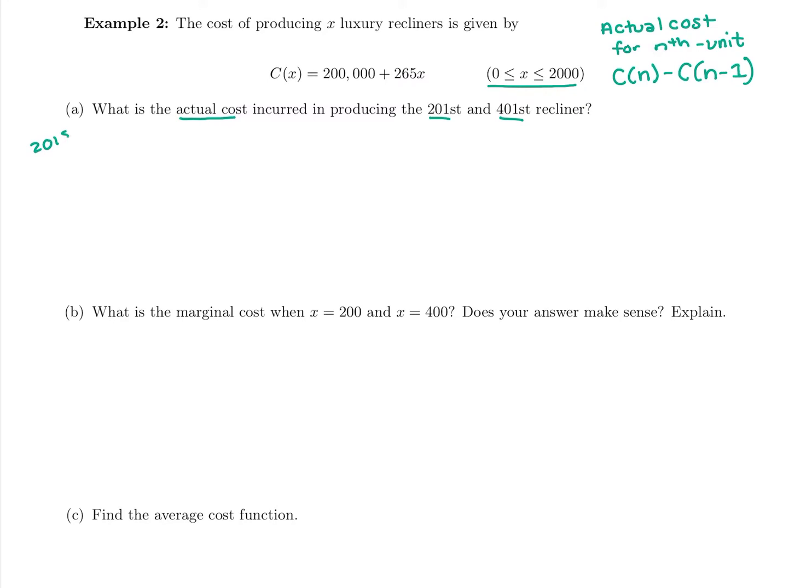For the 201st recliner, we want to know the 201st, so we're going to plug in C(201), find the total cost for all 201, and then subtract plugging in 200 into the total cost formula. I'm going to grab my calculator and plug into it twice. So I'm going to do 200,000 plus 265 times 201.